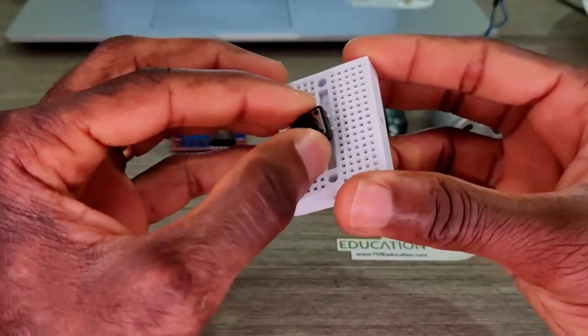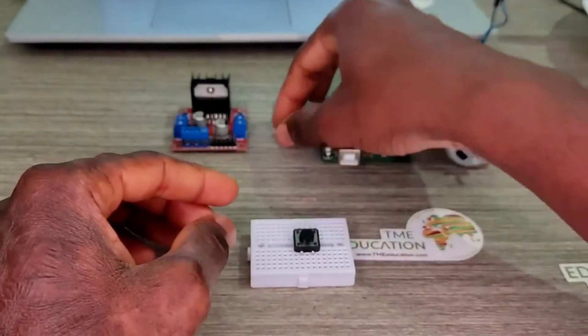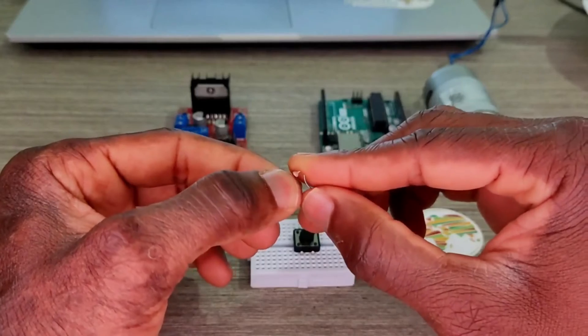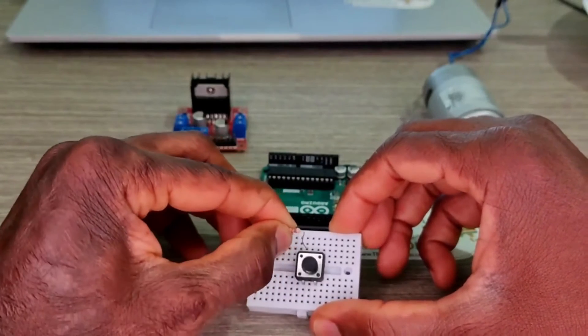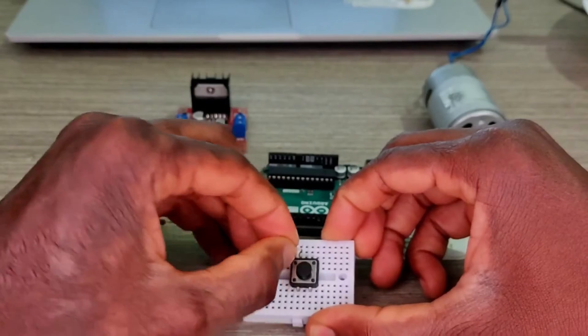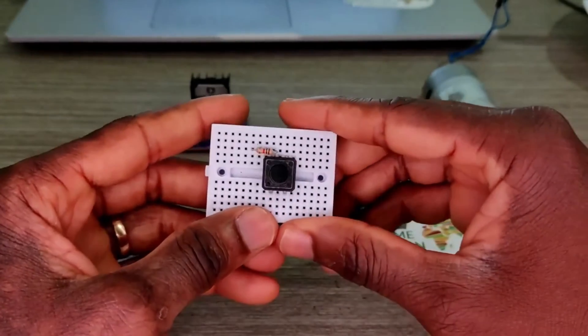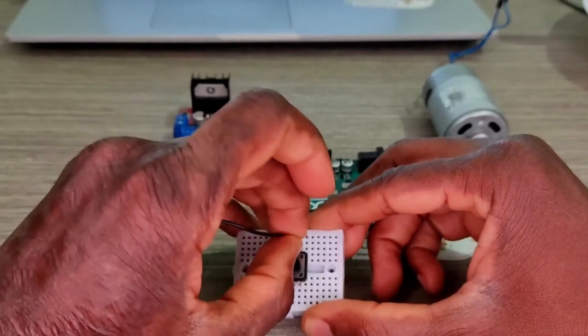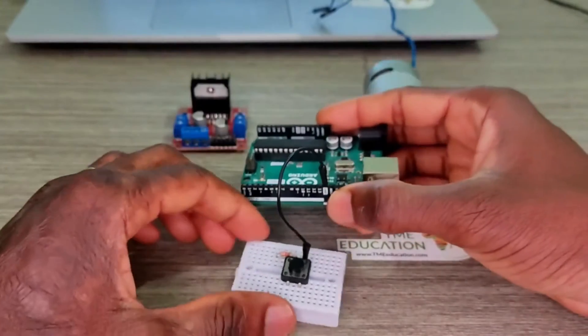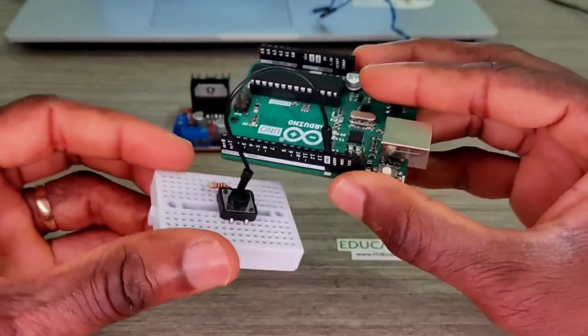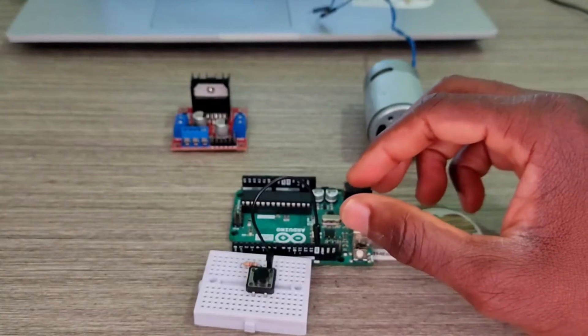Now I'm going to take my 10k ohm resistor and I'm going to put that on this side of the breadboard connected to one of the pins of the push button like so. Now this is going to ground close to pin 13 because we're going to form a pull-up resistor.